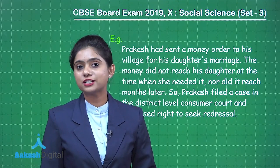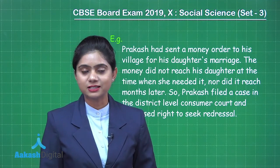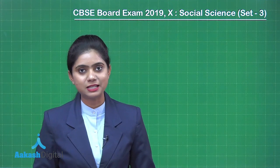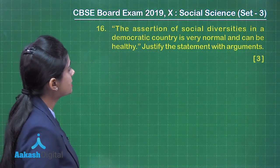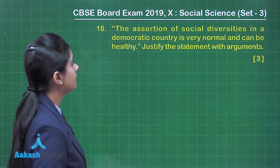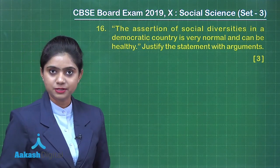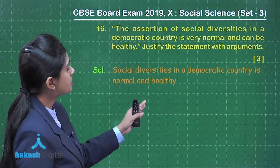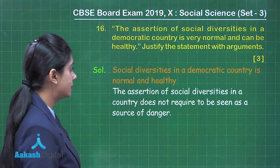Now let's move on to question number 16. The assertion of social diversities in a democratic country is very normal and can be healthy — justify the statement with arguments. Social diversities in a democratic country is normal and healthy. The assertion of social diversities in a country does not need to be seen as a source of danger.